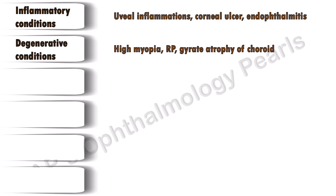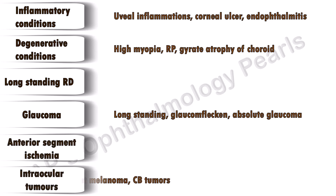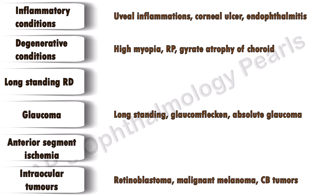Degenerative conditions like degenerative myopia, retinitis pigmentosa, and others such as gyrate atrophy of choroid, essential iris atrophy, etc. Long-standing retinal detachment, long-standing glaucoma of any type, glaucomflecken following acute angle closure and absolute glaucoma, anterior segment ischemia, and intraocular tumors such as retinoblastoma, malignant melanoma, and ciliary body tumors. This list is not exhaustive but knowing these causes is enough.